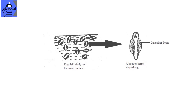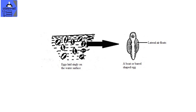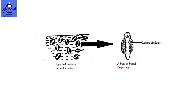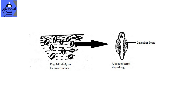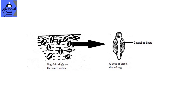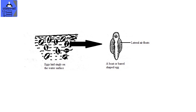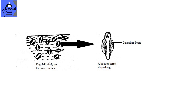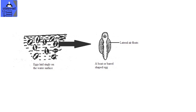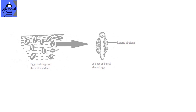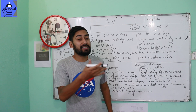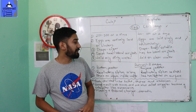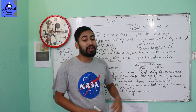Anopheles eggs are boat-shaped or spindle-shaped, laid horizontally, and they float. They have two lateral floats on the sides. Anopheles eggs also have floats and are horizontally floating. The Anopheles mosquito lays eggs in clean water.